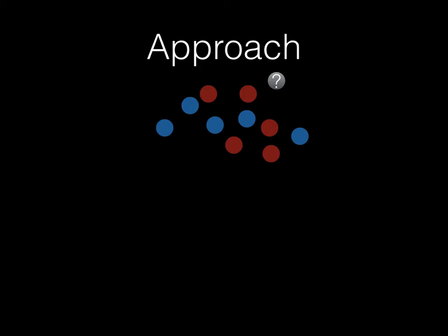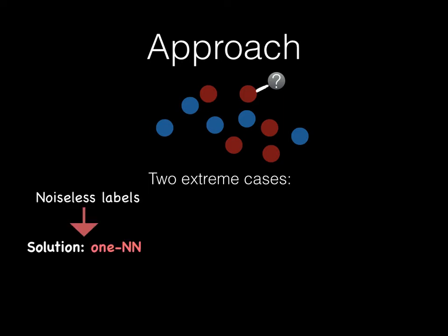The following example of a classification task illustrates our approach. Red and blue points are train points, and the test point appears in gray. Depending on our assumptions, there are two extreme cases. In case where labels are noiseless, we are left to cope with the bias of our model, and the optimal solution in this case is the one nearest neighbor rule.